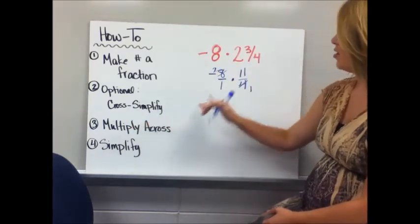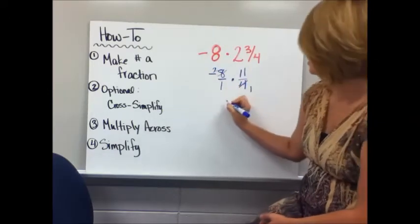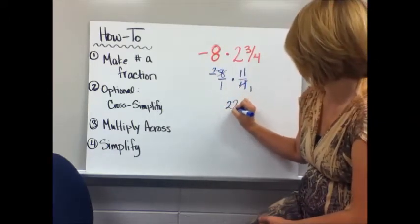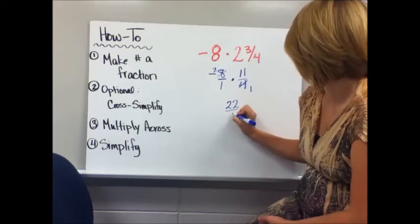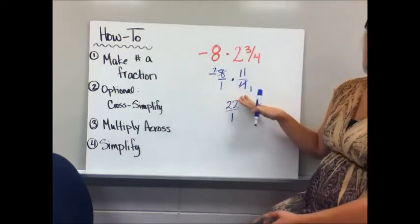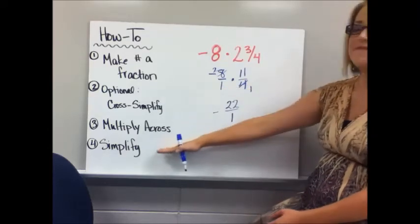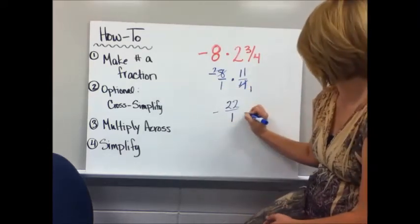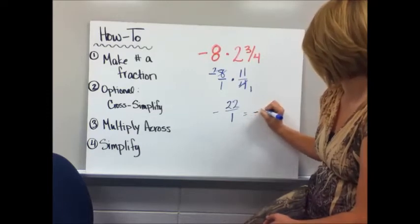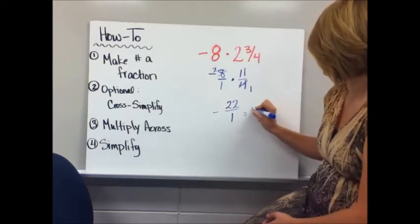Then I'm going to multiply across. 2 times 11 is 22 over 1, and then I had a negative times a positive. Don't forget your integer rules is a negative. Step 4, I'm going to simplify and I get negative 22.